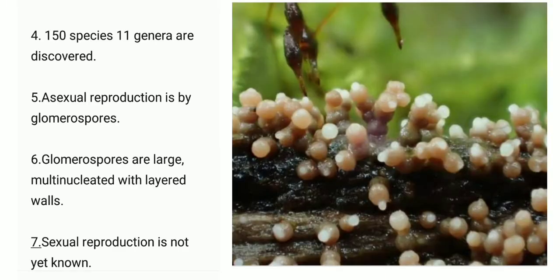Point 4: 150 species and 11 genera are recorded. Point 5: Asexual reproduction is by glomerospores. Glomerospores are distinct from the zoospores.